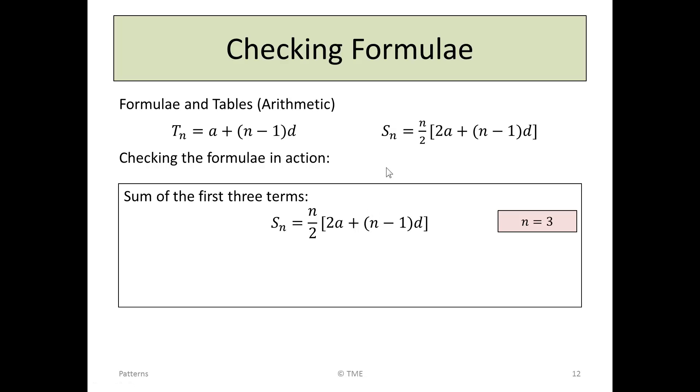Now, let's look at the second formula you're given. Sn is N over 2 into 2A plus N minus 1 D. This is not the term, but the sum of a number of terms. Now let's check the sum of the first three terms. We just transcribe the formula. Sn is N over 2 into 2A plus N minus 1 D. We're checking for the first three terms, so N we'll set equal to 3.